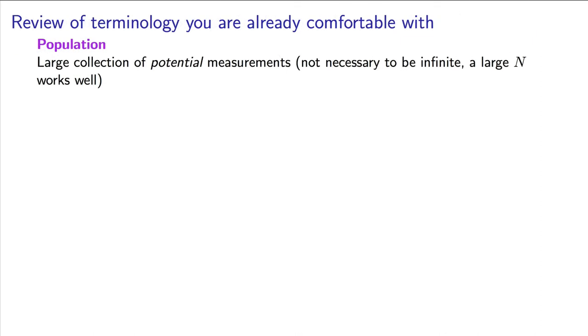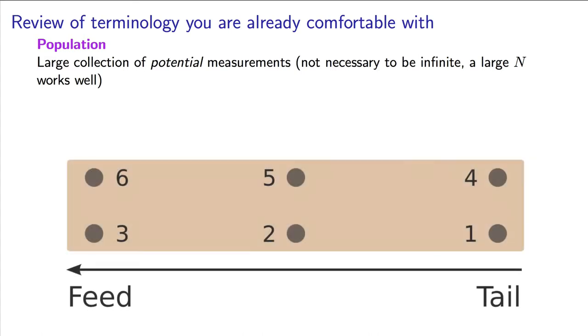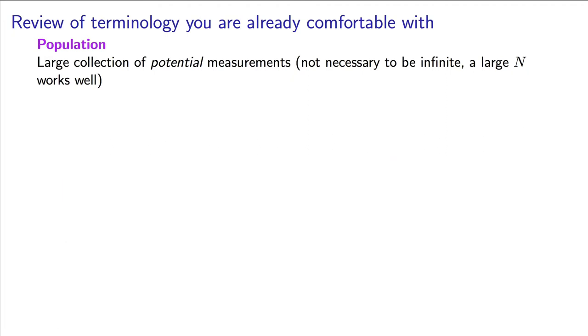Firstly, the idea of a population is that there is a large collection of potential measurements we could make. That large number is capital N. This population represents all the data possible. For example, the thickness of wooden boards produced on our process last year. We could go measure every single board from that time period. If we did so, that would be our population. In most instances, measuring the entire population is expensive and impractical.